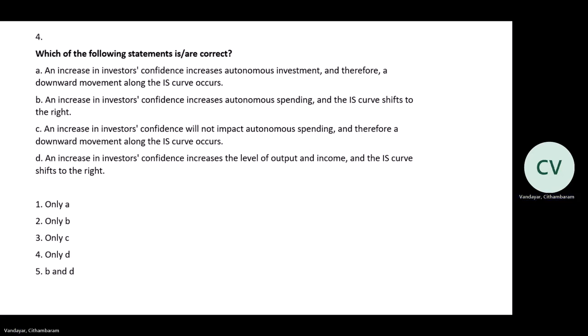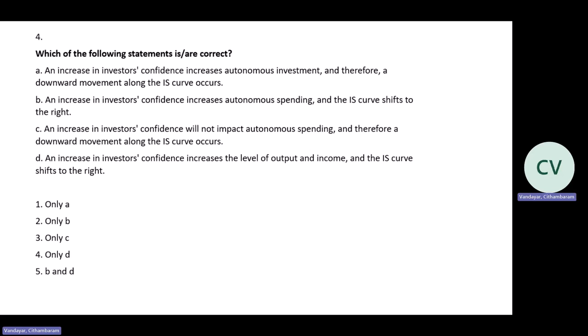Remember, C is incorrect because your investor confidence will impact on your autonomous spending. I've chosen four questions from your revision exercises — there are more questions there. Please attempt those questions. If you don't understand any one of those questions, post your answers on the discussion forum and we will help you.